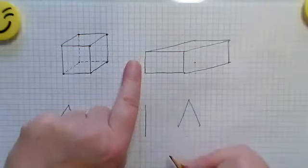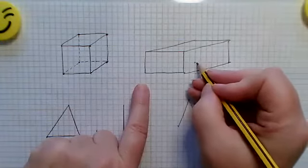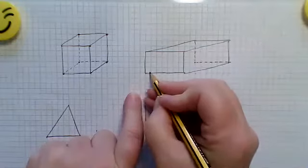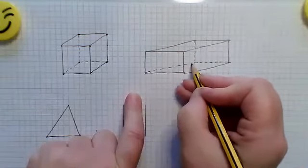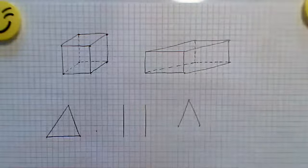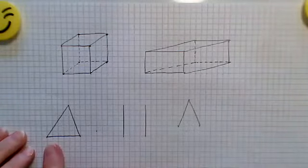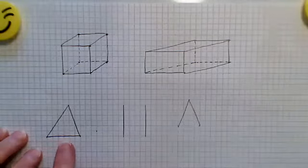So those are the visible faces. If I want to show the hidden faces as well, I can just drop down some dotted lines like that. So a couple of other shapes that is useful to know how to do—this is a triangular pyramid.